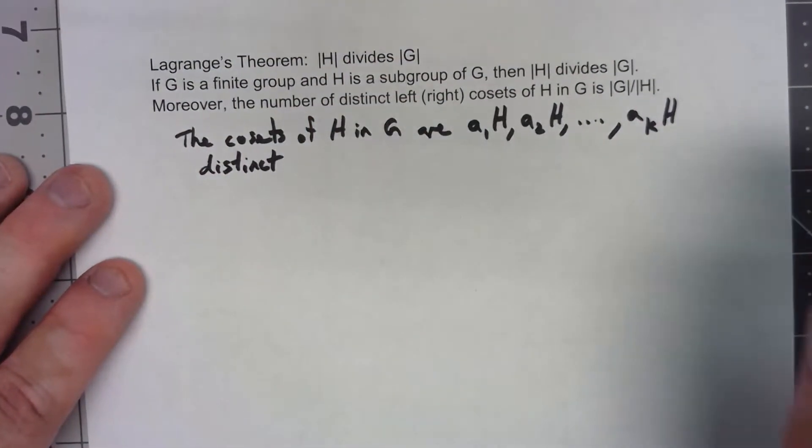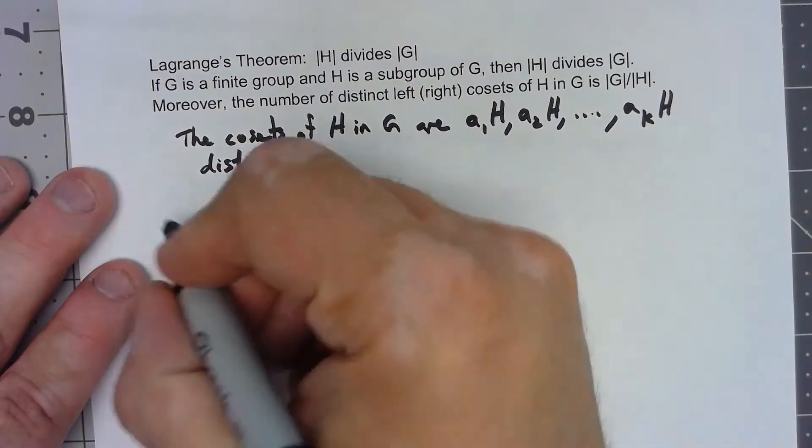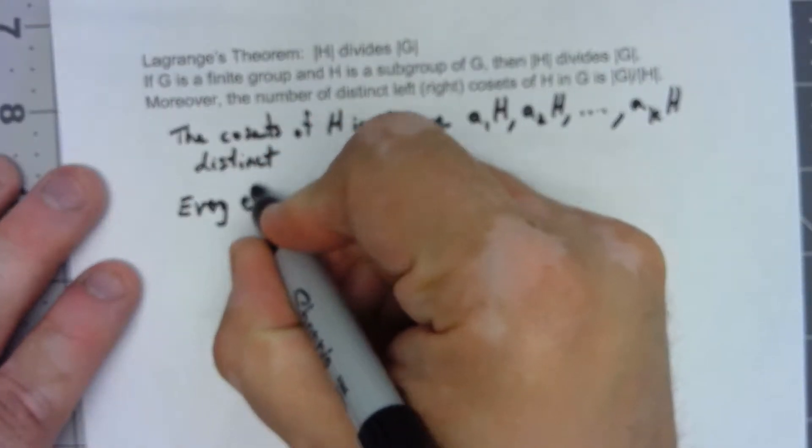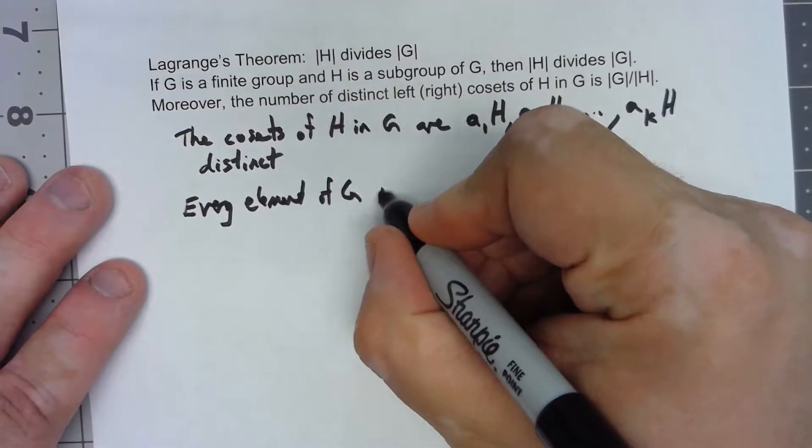There are two things that we want to prove here. We want to prove that every element of G is in one of those cosets.